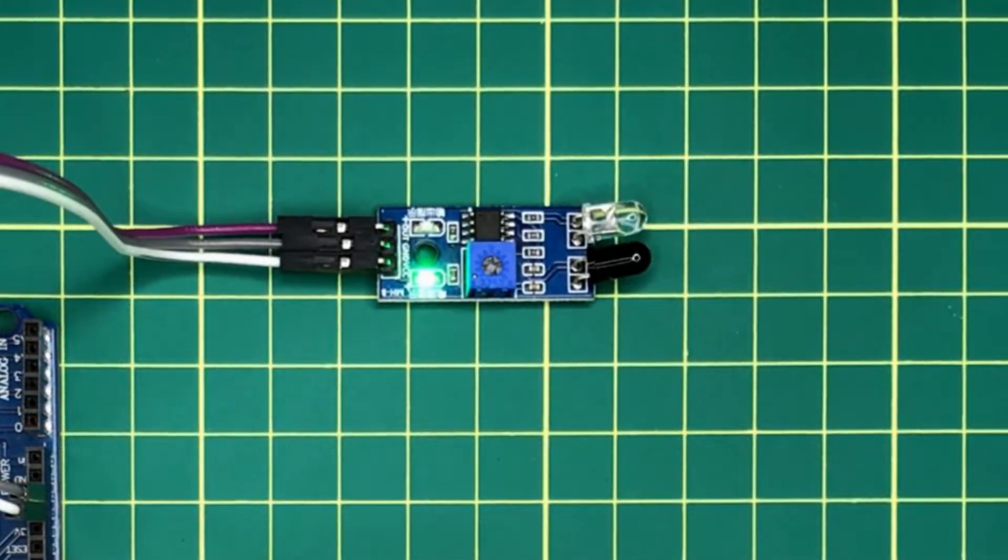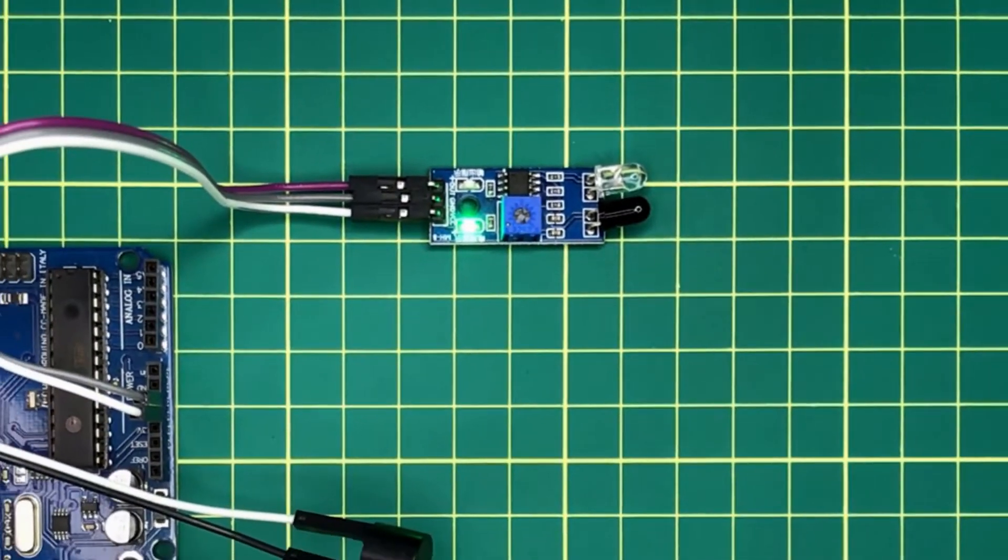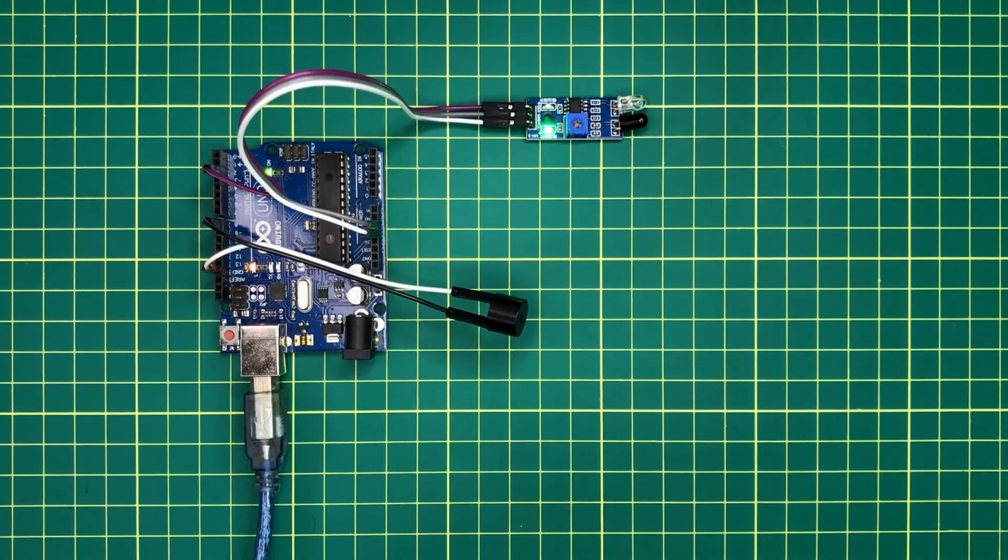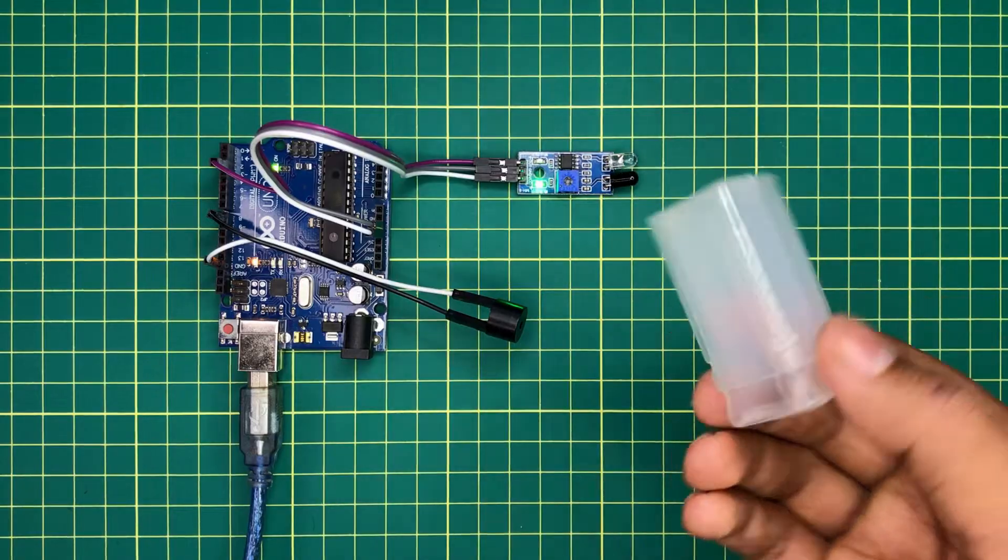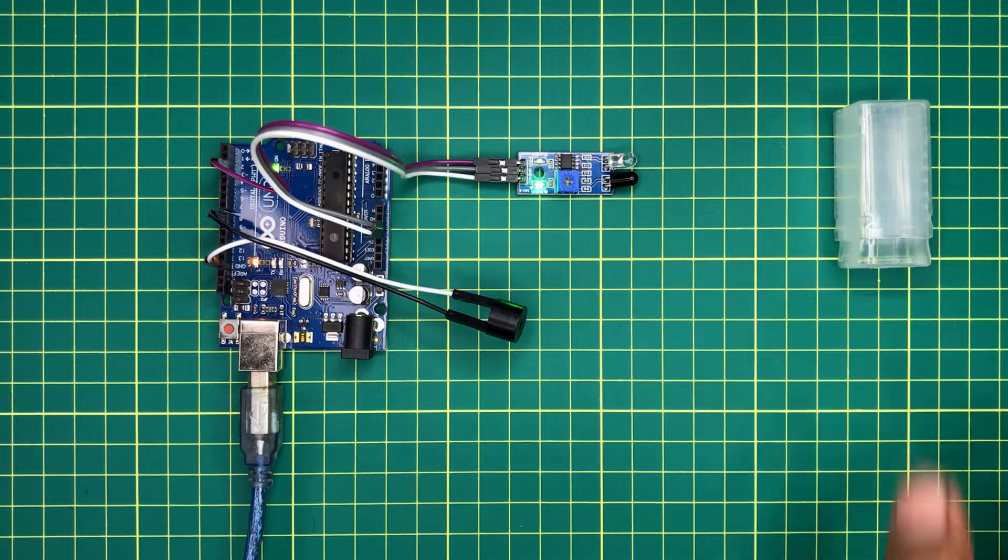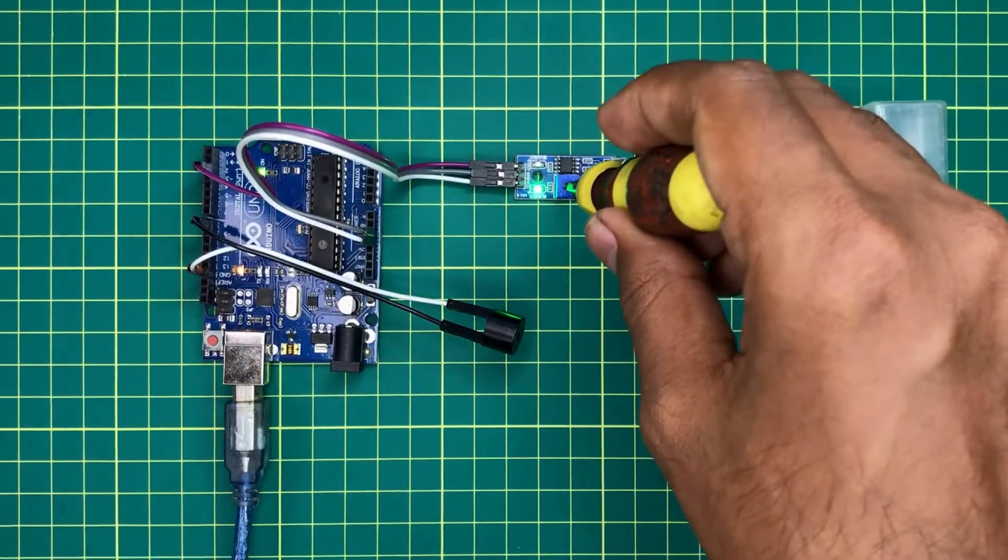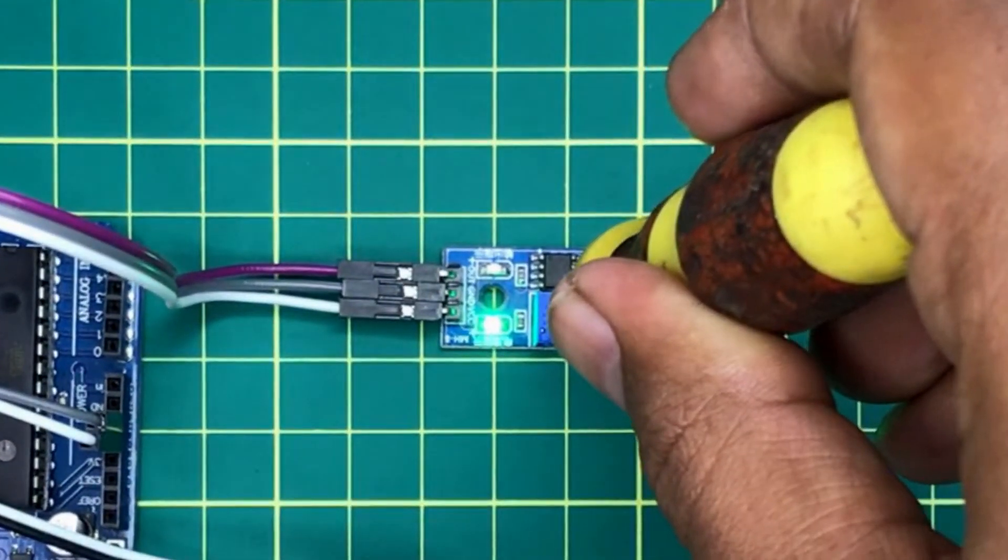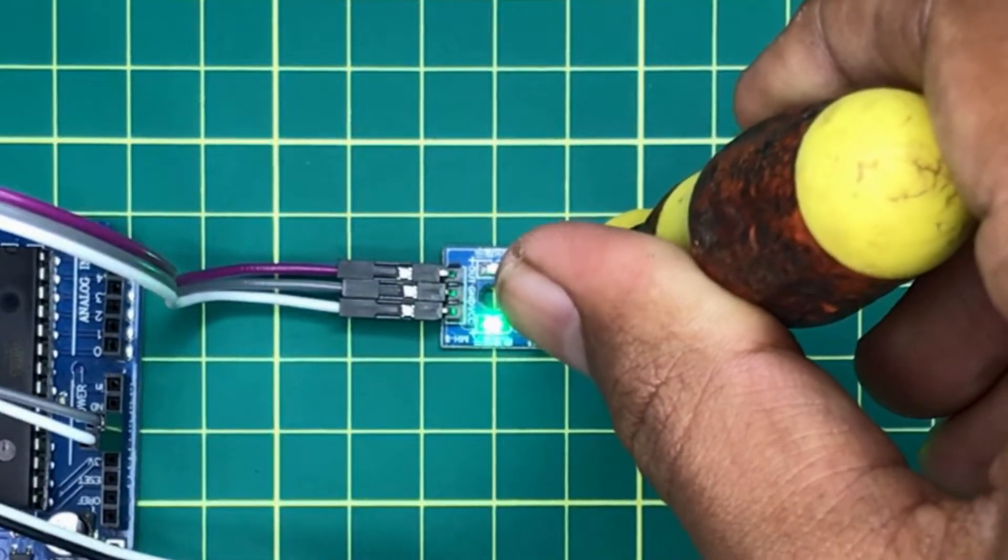To do this calibration, put an object in front of the sensor at the required distance. I will put this object a few centimeters away from the sensor. Then, I will turn this potentiometer to the exact place where the obstacle LED starts to turn on.